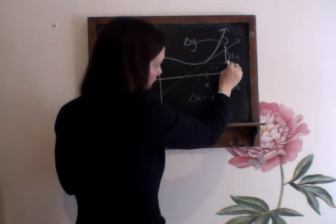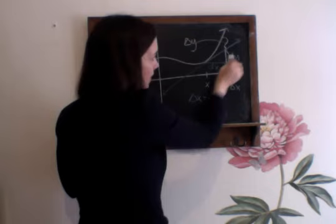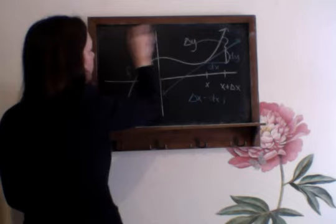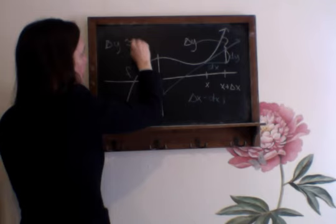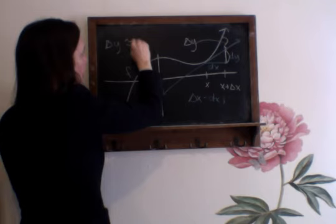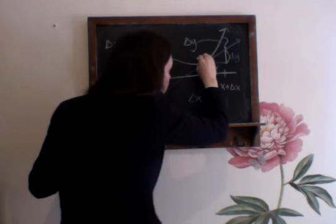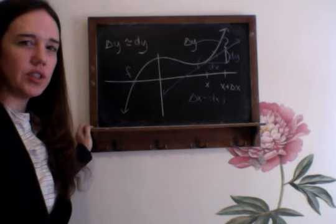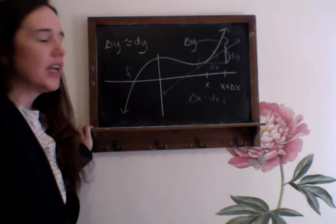So the idea is that delta y is approximately dy. The idea is that when you get really close to, when you get in a little interval around some arbitrary x value and you look at the function and you look at the tangent line, the function and the tangent line are very close to each other. They're very similar.